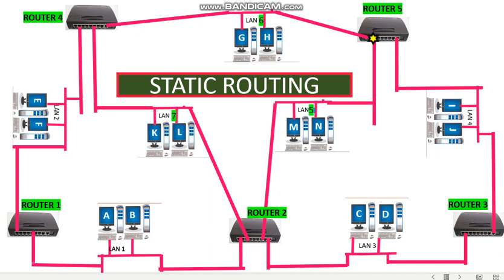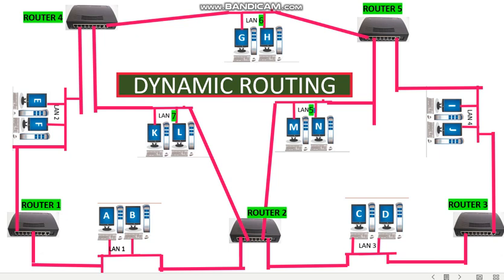Dynamic routing is also called adaptive routing. In dynamic routing, each packet can travel through a different route based on the conditions of the network. Let us assume that station A in LAN 1 wants to send data to station G in LAN 6. The packet is first received by router 2. Router 2 chooses the best path to transfer the packet. Based on traffic conditions and other factors of the network, if it chooses router 5, then the packet goes to router 5 along LAN 5, then from router 5 it goes to LAN 6, and then it reaches destination station G.